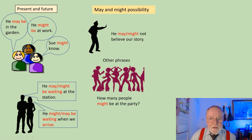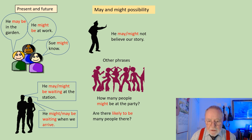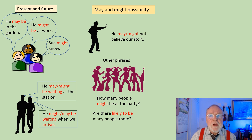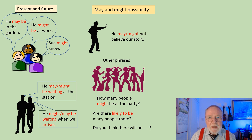There are other phrases we can substitute for might and may. How many people might be at the party? Well, I could say: are there likely to be many people there? 'Likely to be' is a very useful little phrase in English, and it makes your English sound very good if you can use it. Another way of expressing this is to say: do you think there will be a lot of people at the party? So we do have alternatives to might and may.